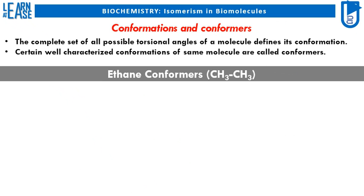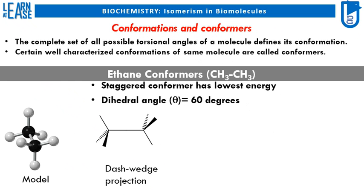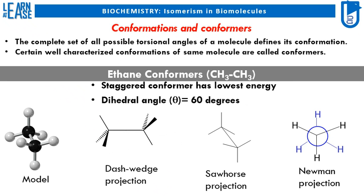I will explain conformers of ethane, denoted by the structural formula C2H6 and represented as CH3-CH3. The staggered conformer of ethane has the lowest energy, as the dihedral angle theta equals 60 degrees. The images show the staggered conformer of ethane represented using four models: ball-and-stick model, dash-wedge projection, sawhorse projection, and Newman projection.